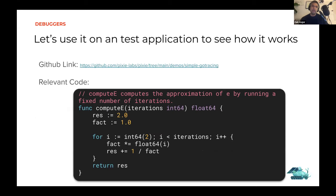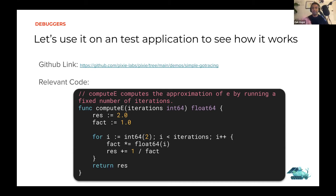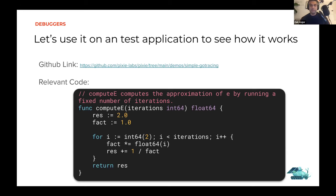Once you get Delve up and running, you can go and play around in the application. Everything in this talk is open source and available to tinker with. There's a test application — a very simple HTTP server. When you call the HTTP server with some arguments, it'll compute the value of E using an iterative process. Depending on how many iterations you pass, you'll get a potentially more accurate value of E. I'm just using this to demonstrate how debuggers work and how you can log things.